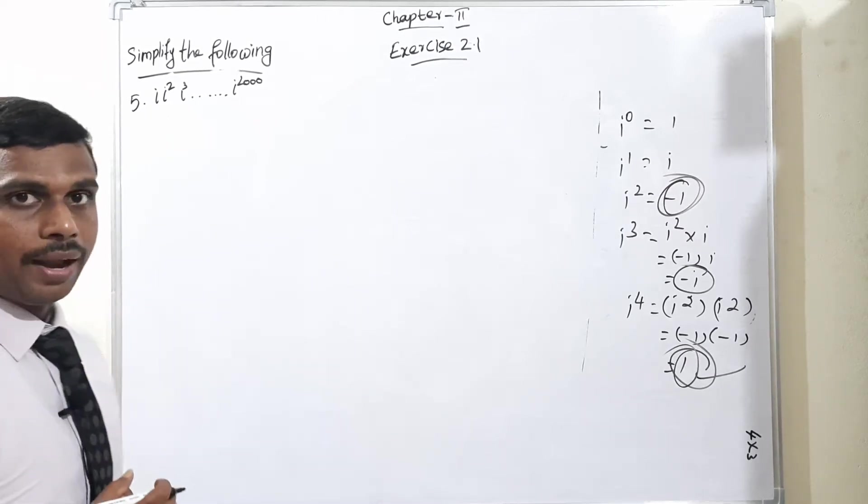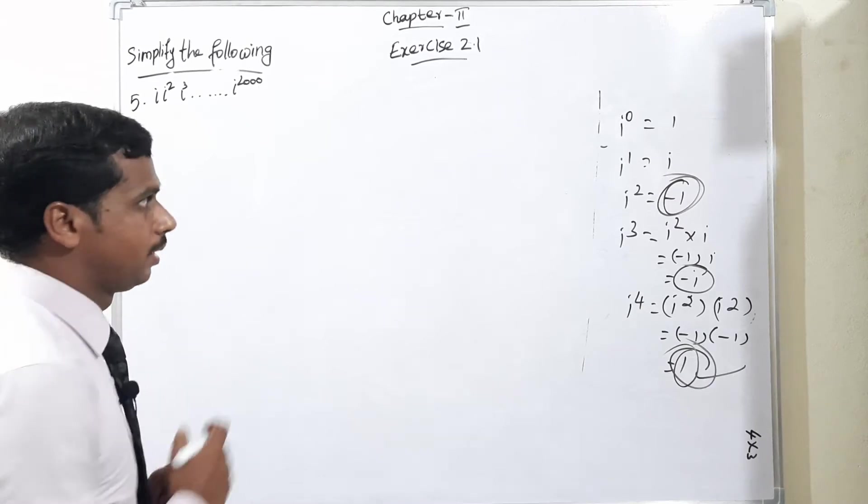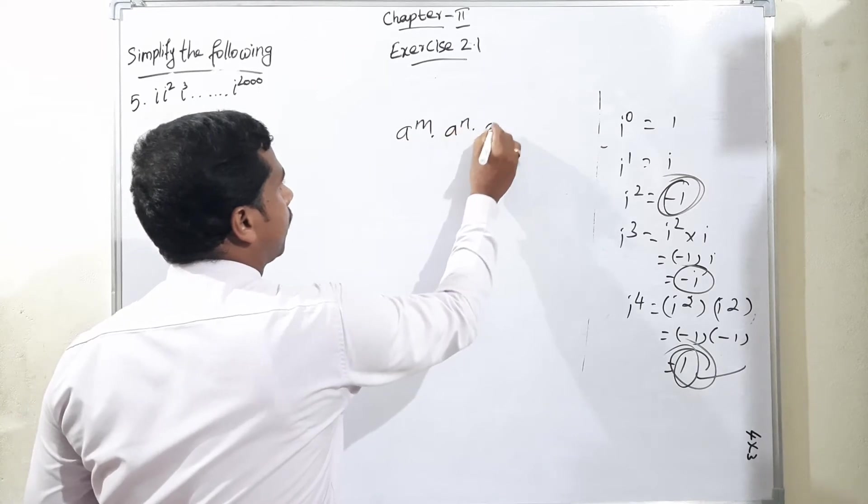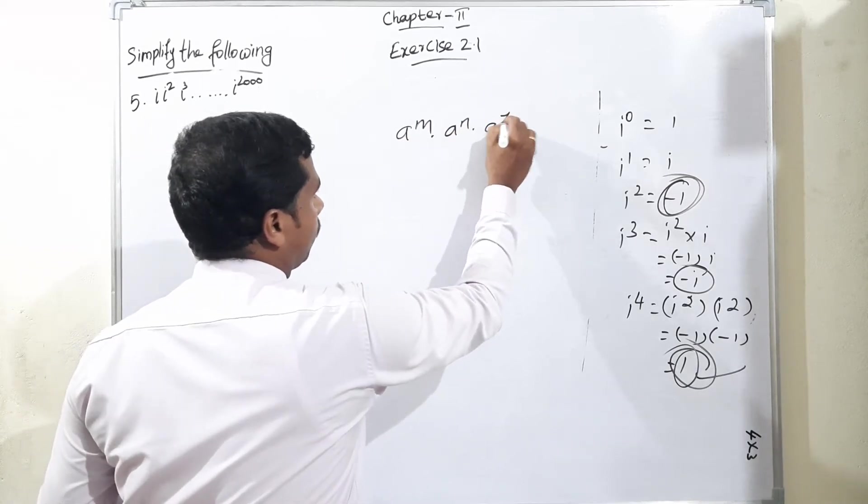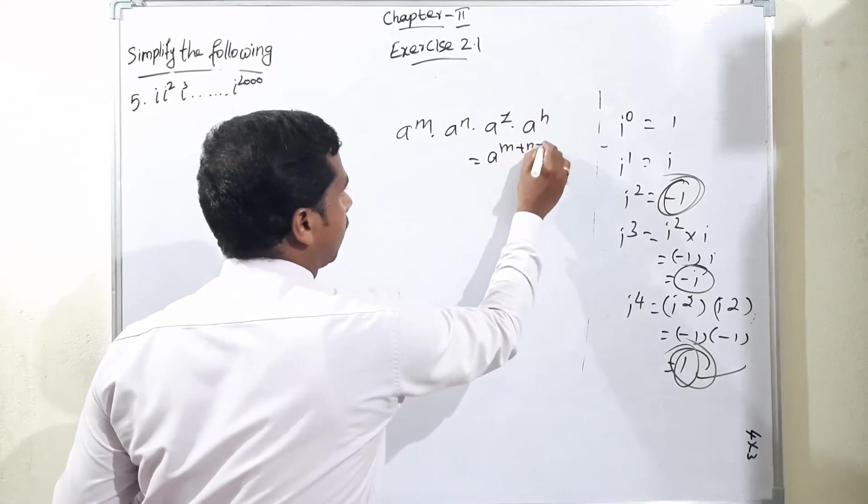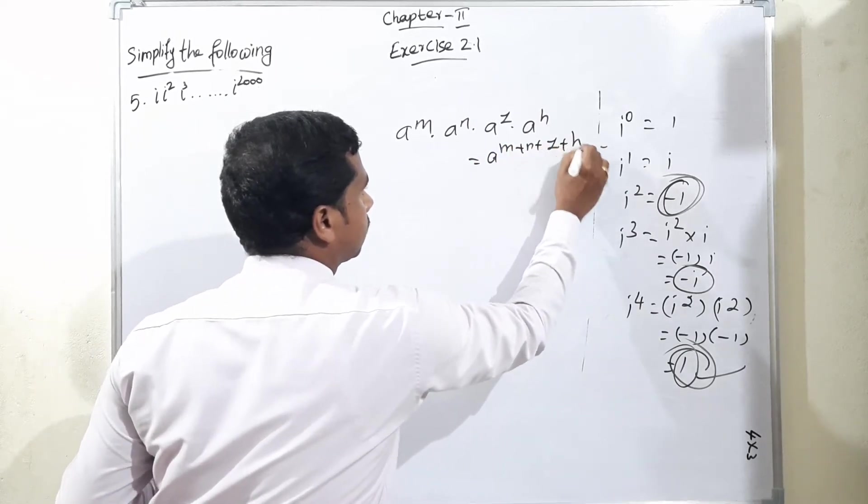Already we have learned one of the important formulas in law of indices. That is a to the power m times a to the power n times a to the power z times a to the power h means the base will be same, so we can write it as m plus n plus z plus h.